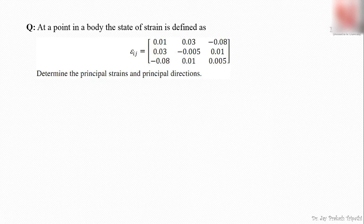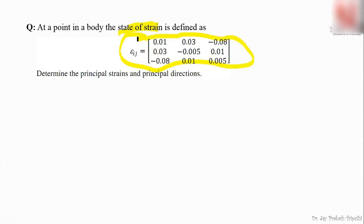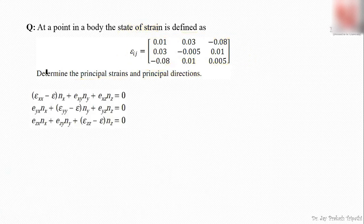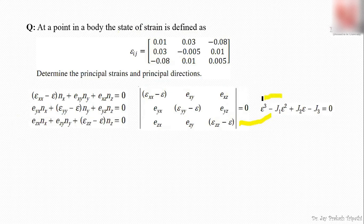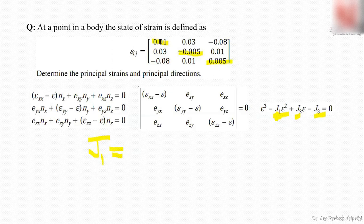Let's understand this whole procedure with a numerical problem. The state of strain at a point in the body is given, and we need to find the principal strains and their directions. The first step is to write the three simultaneous equations and equate the determinant to zero for a non-trivial solution. This determinant yields a cubic equation, and J₁ is found by summing the diagonal elements, giving J₁ = 0.01.